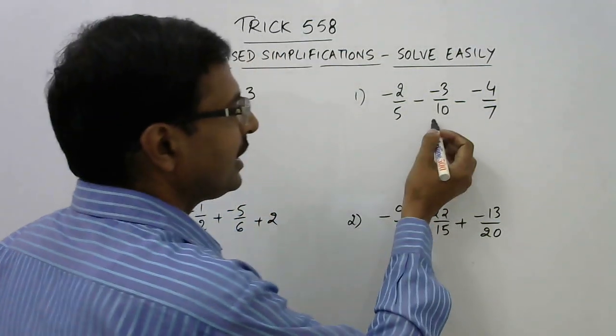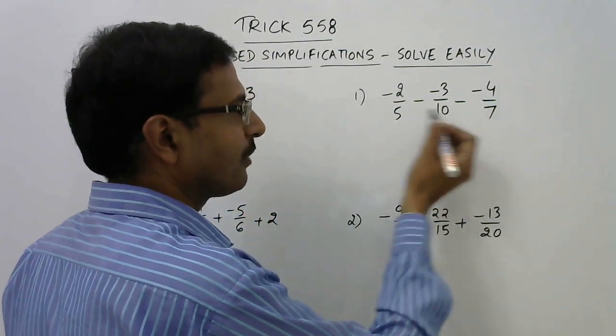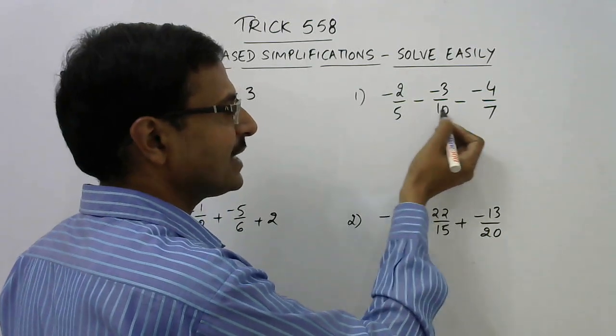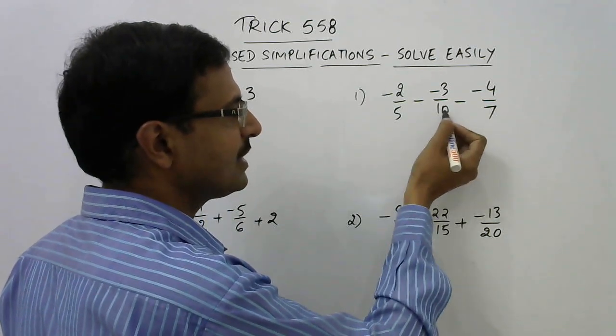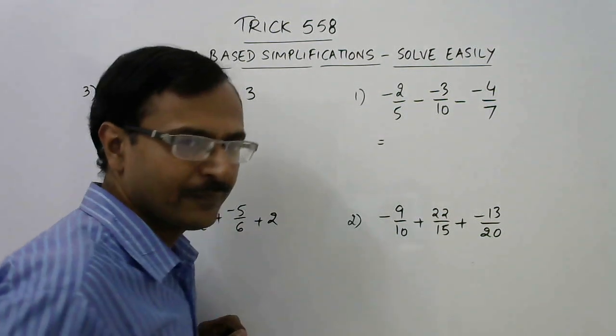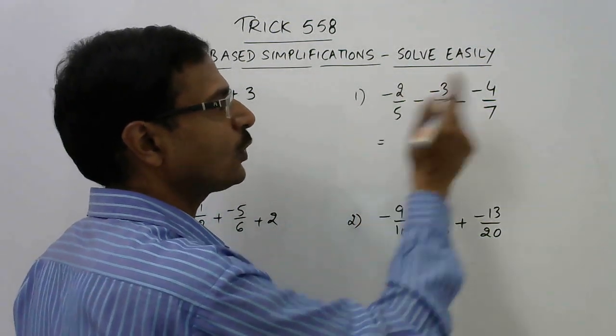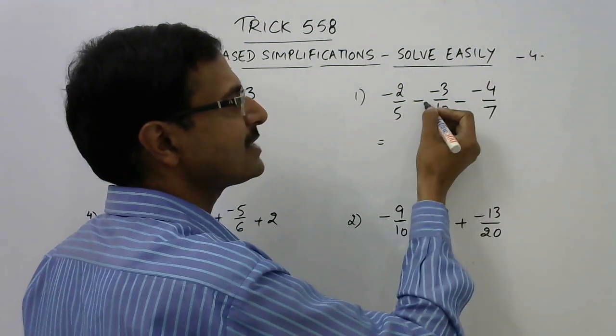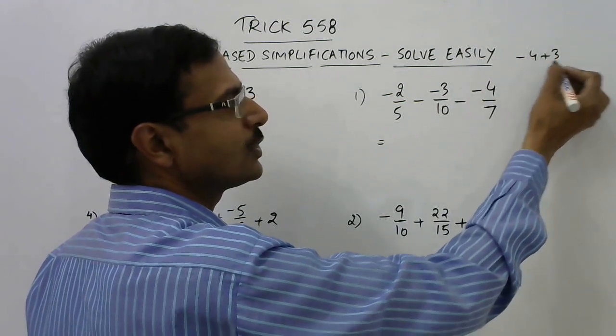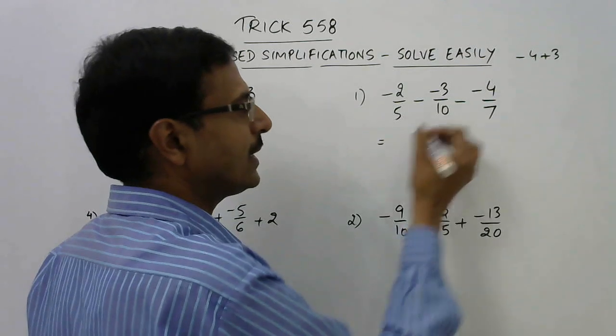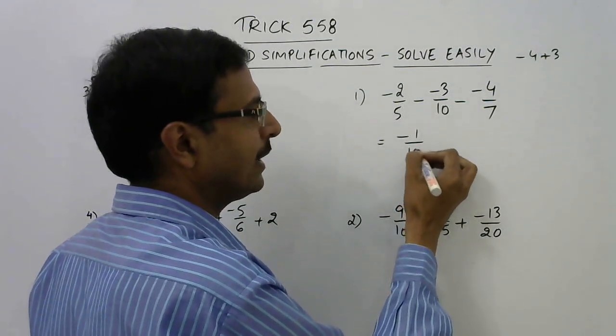Now see here the three terms 5, 10 and 7. 5 and 10, 5 divides 10 exactly, so I will consider these two first and find their sum orally. Now see 5 into 2 is 10, so minus 2 into 2 is minus 4 and minus plus 3. This gives us minus 1 upon 10.